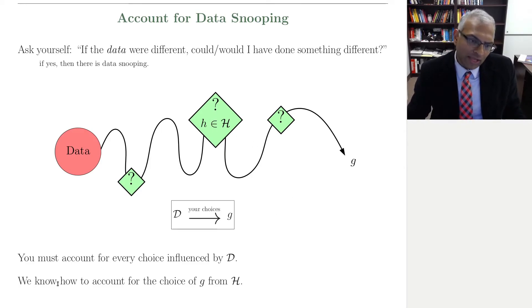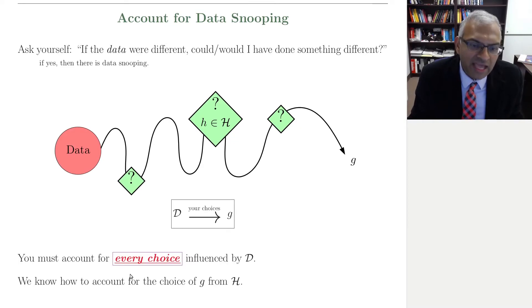So I'm going to emphasize, you must account for every choice influenced by the data. We know how to account for the choice of the final hypothesis from the hypothesis set. But you have to account for every choice made by the data. And I do not know how to emphasize this any more than make it bold, make it italics, underline, include in a purple box.